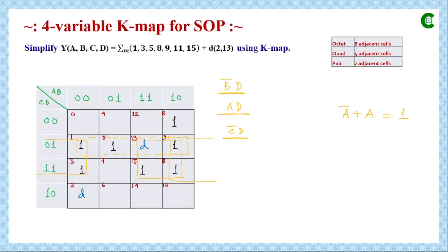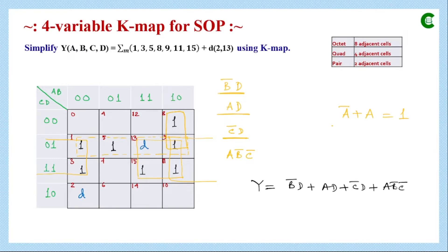There is still one 1 not part of any group. We combine two adjacent cells into a pair. Evaluating: A is 1 (stays A), B is 0 (becomes B'), C is 0 (becomes C'), and D changes from 0 to 1 (eliminated). The term for this pair is AB'C'. One don't care term is left behind, but since no actual 1 remains adjacent to it, it forms no new group. The most simplified form of this boolean expression is therefore B'D + AD + C'D + AB'C'.